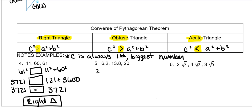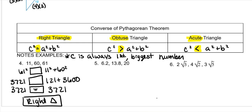The biggest number here is 20. Let's see how it compares with 6.2 squared and 13.8 squared. But we're not even sure if this makes a triangle — 6.2 and 13.8 are really small sides, so let's check the triangle inequality first. 6.2 plus 13.8 is supposed to be bigger than 20, but when you add them you get exactly 20, which is not greater than 20, so this is not a triangle at all.